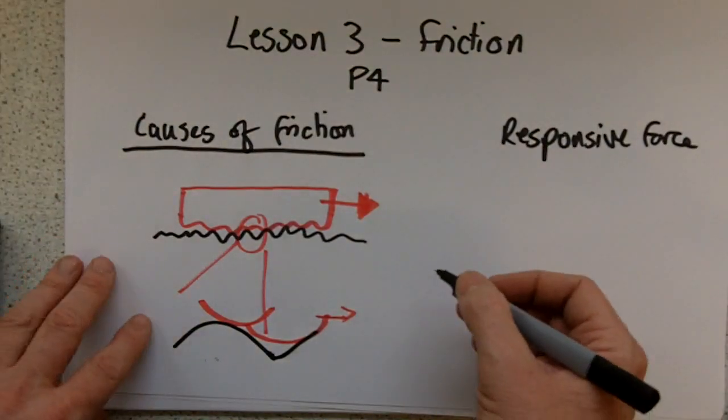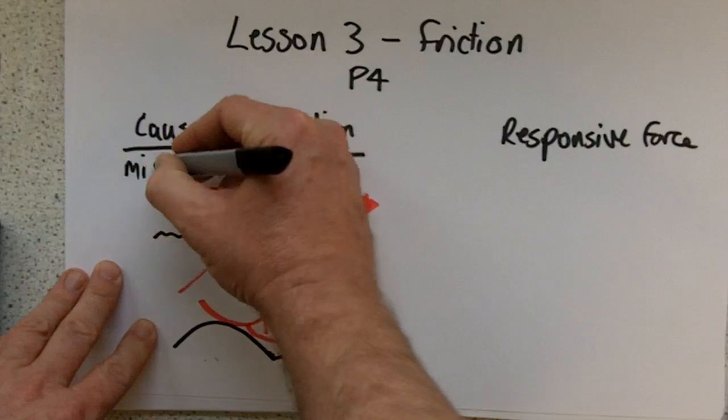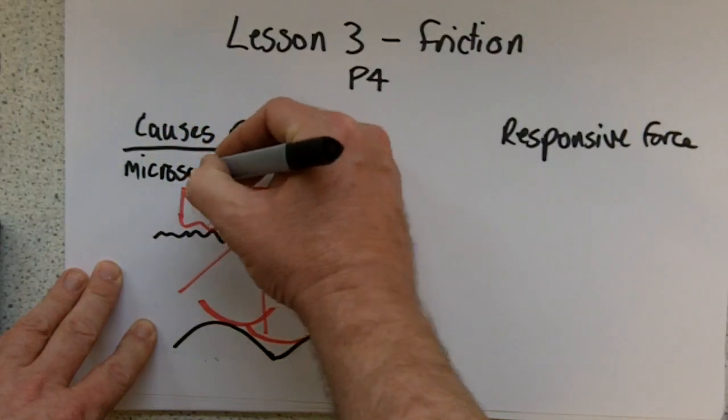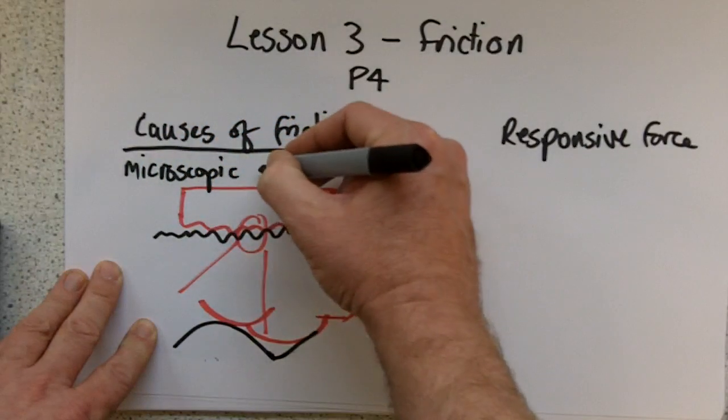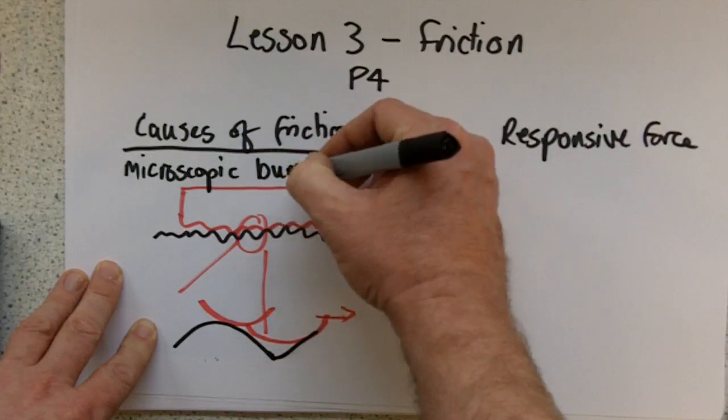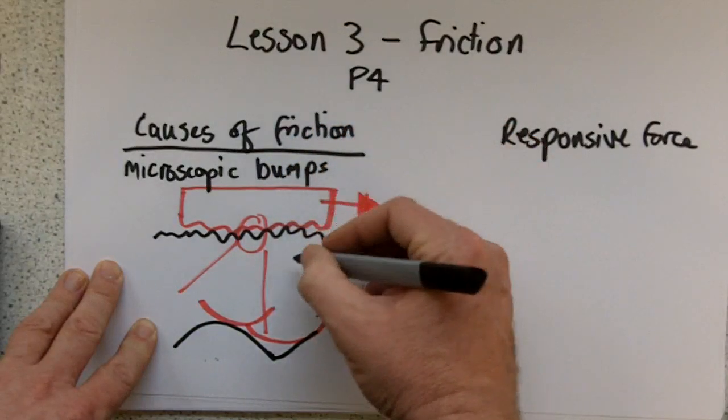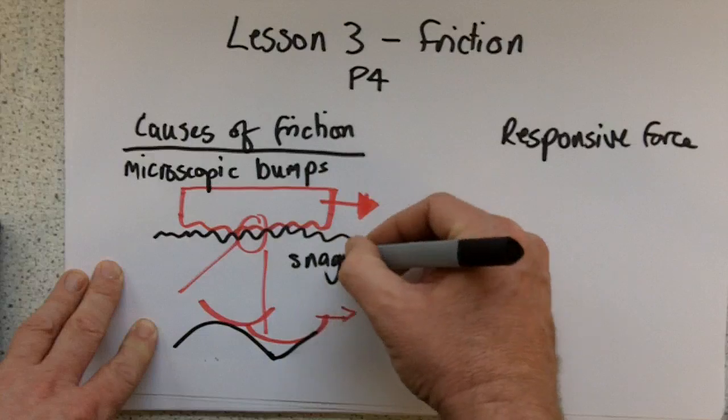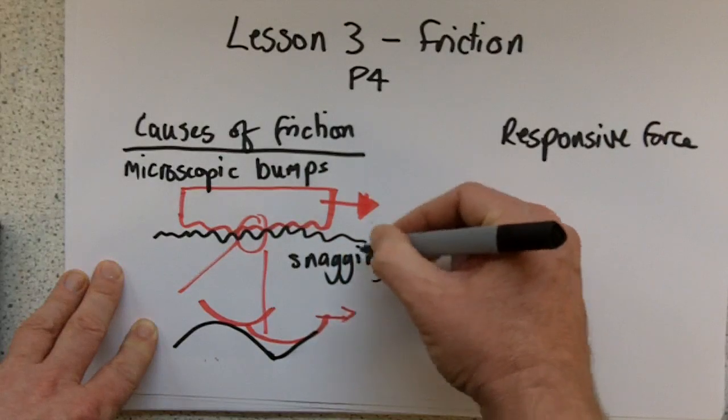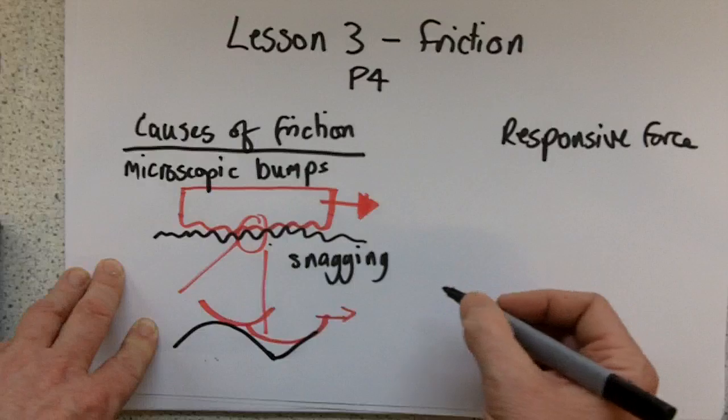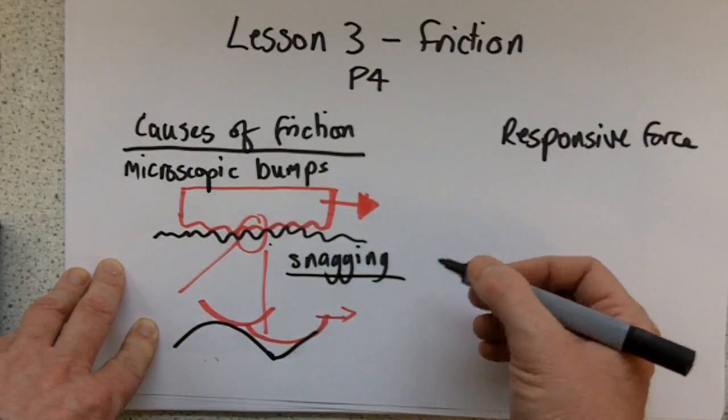and it's this snagging force that causes friction. So friction is caused by microscopic bumps, or microscopic roughness, and it's the snagging of these lumps and bumps from the object you're moving and the surface, which causes friction to occur.